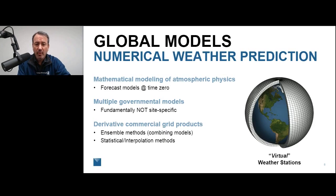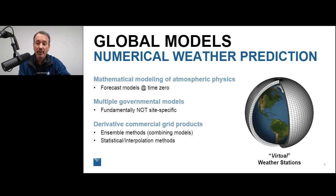With that background, I'll first talk about weather sources in general, then dive into virtual weather data in particular. We'll start with global weather models — these are models developed over many decades to predict weather, integrating satellite data, ground observations, balloons, and similar inputs to physically predict what's happening in the atmosphere, not just at the surface but through different layers. A lot of weather data products available to growers now come from these physical models, where you can think of current weather as time zero.